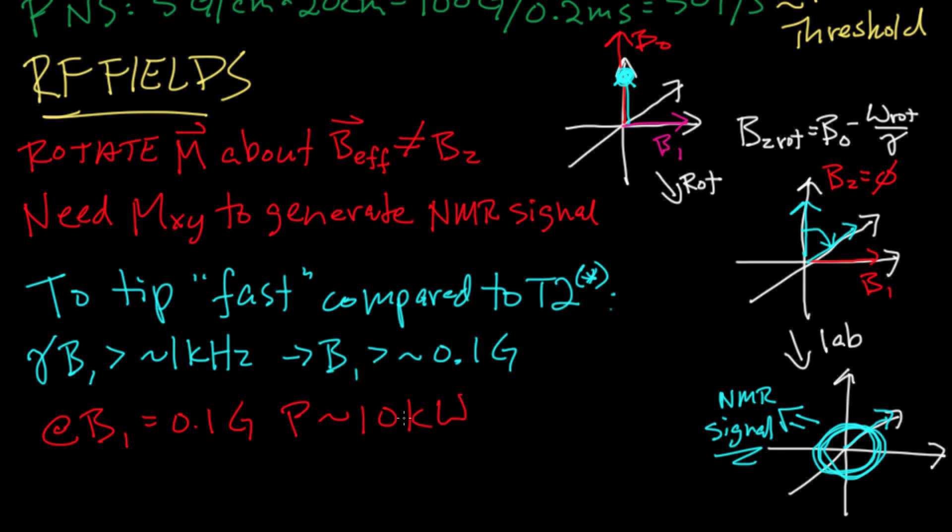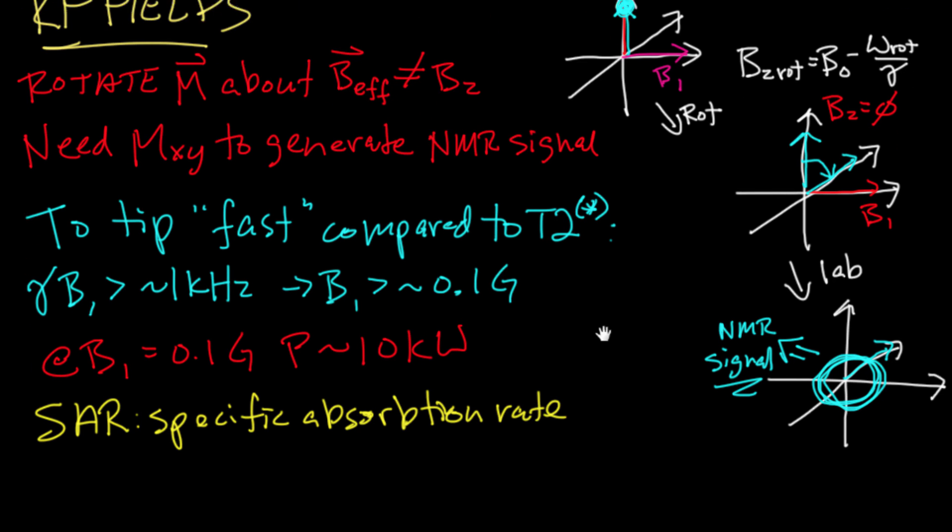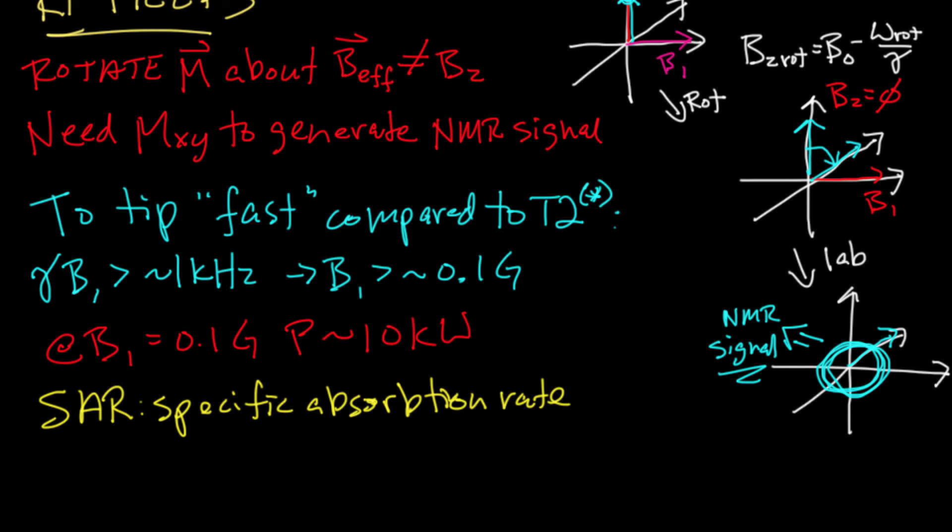That discussion is beyond the scope of this introduction, and so we'll jump to the answer. And that is that to produce a B1 field of about 0.1 Gauss in a human body, you need about 10 kilowatts of RF power. Now the primary limitation to how much power you can apply is the fact that some of that power is actually deposited in the body and converted into heat. And that absorption of power is characterized by something called the specific absorption rate. The FDA regulates SAR, and fortunately the power that's required to perform MRI effectively at the duty cycles that are required for MRI pulse sequences results in temperature rises in the body that are much, much less than 1 degree.